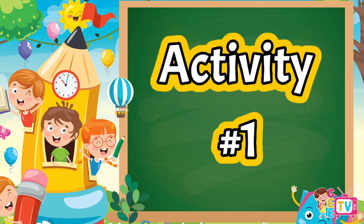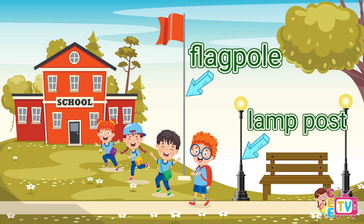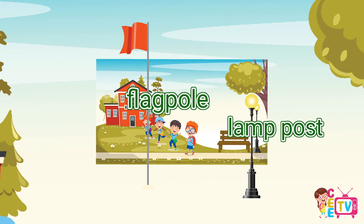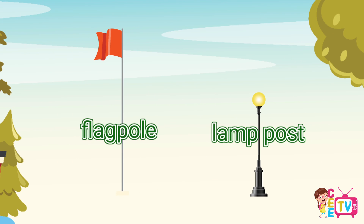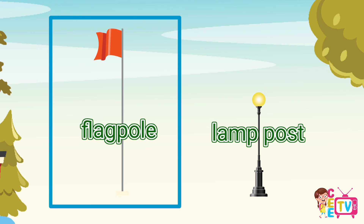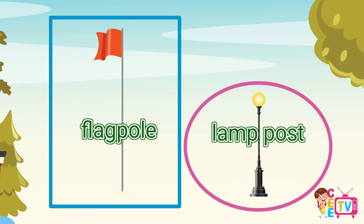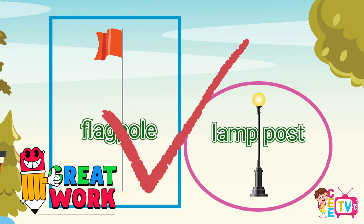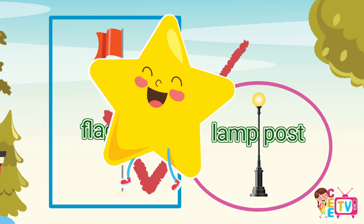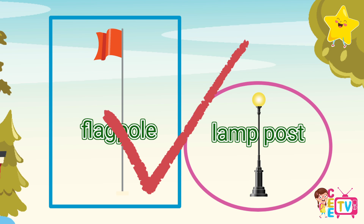Activity number one: Box the tall object and circle the short object. I will box the flagpole because it is tall, and I will circle the lamppole because it is short. Very good! You earned your first star! Yay!